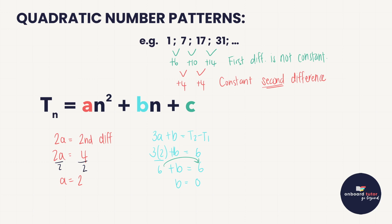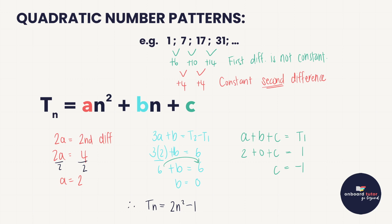Finally, to find c, we use the formula a + b + c = term 1. Substituting a = 2, b = 0, and term 1 = 1, we solve to get c = −1. So the general term for this sequence is Tn = 2n² + 0n − 1, which simplifies to Tn = 2n² − 1.